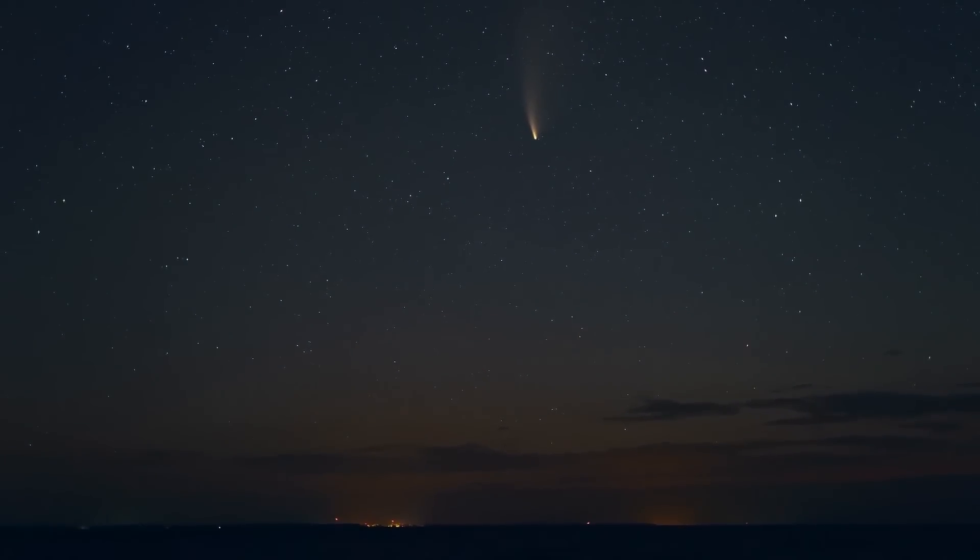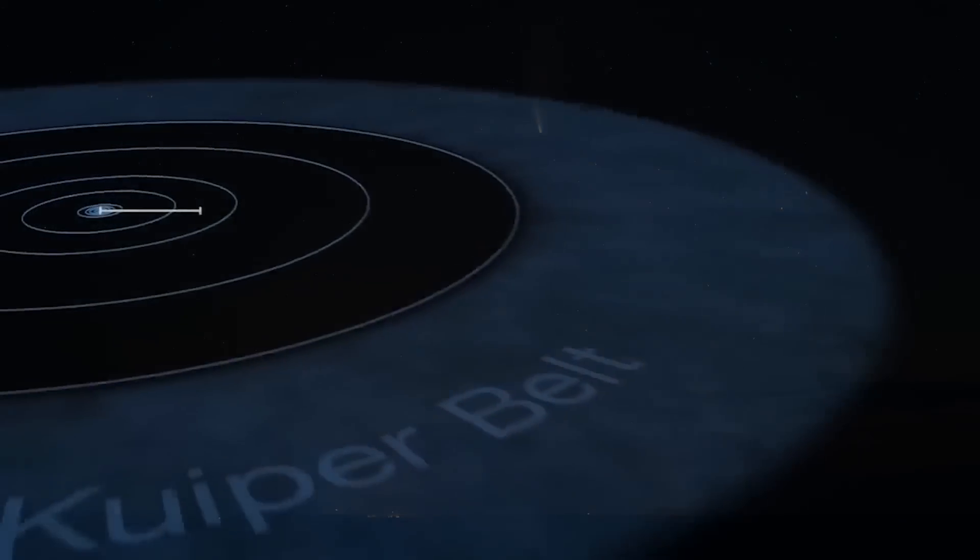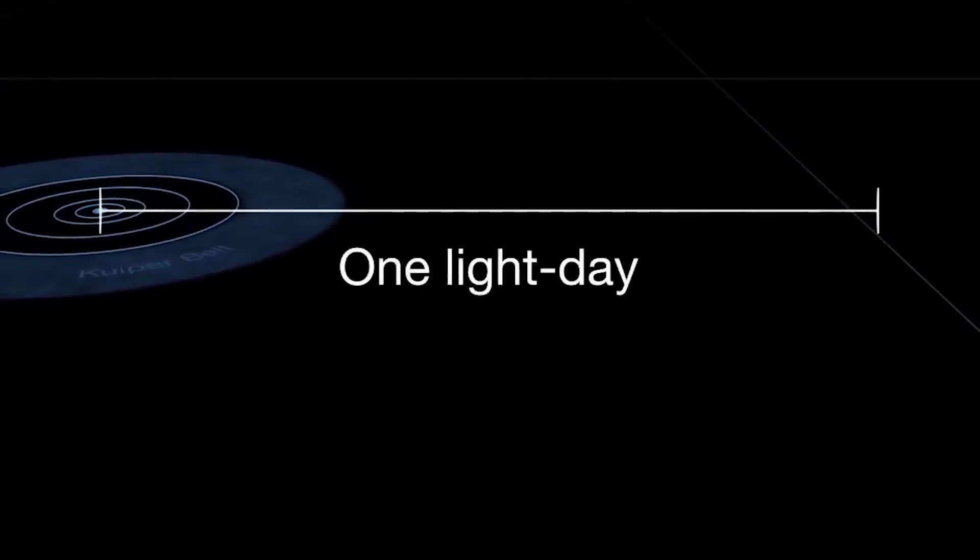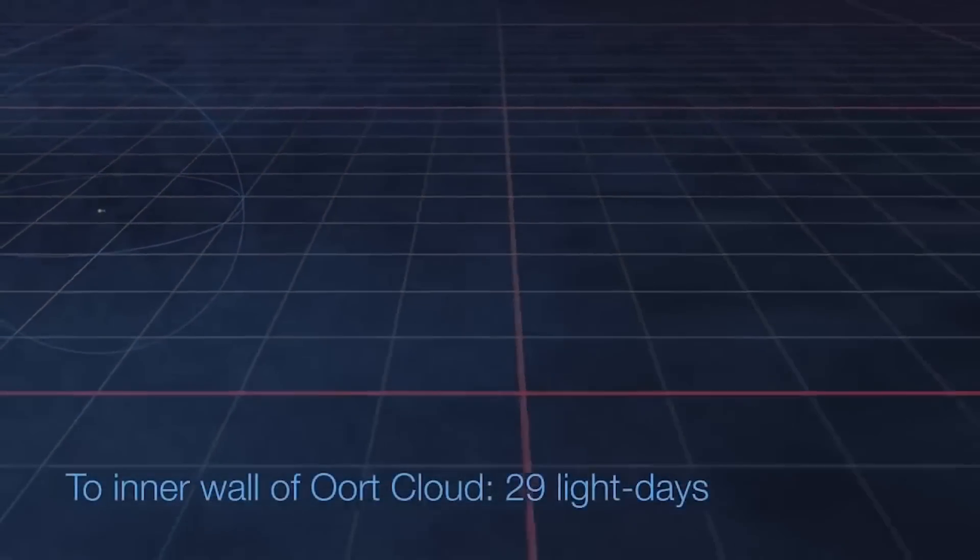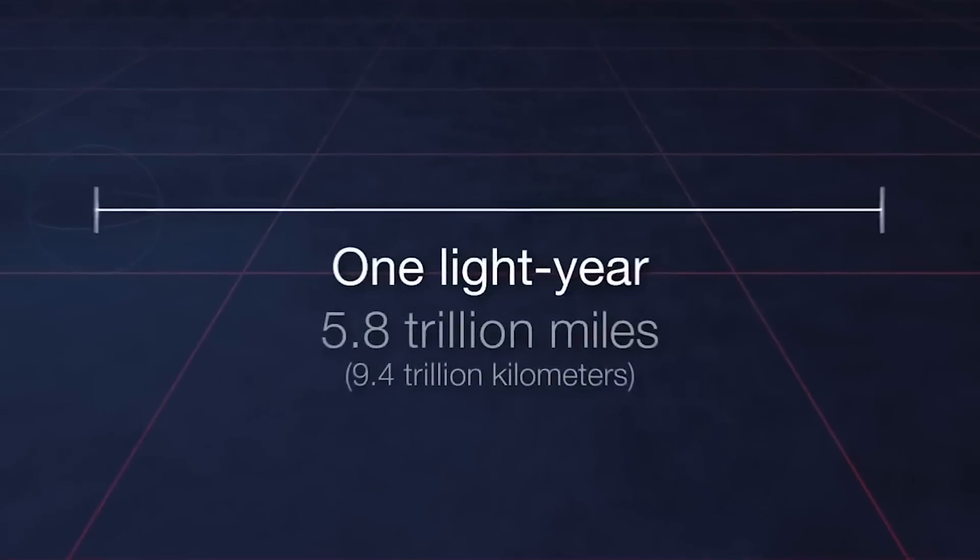But what has the Oort cloud to do with comets? Well, actually, the outer Oort cloud is only loosely bound to the solar system and thus is easily affected by the gravitational pull both of passing stars and of the Milky Way itself. These forces occasionally dislodge comets from their orbits within the cloud and send them toward the inner solar system. And that's exactly where our giant comet is coming from.